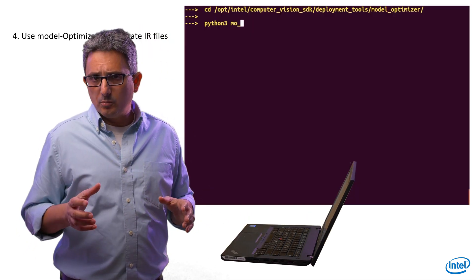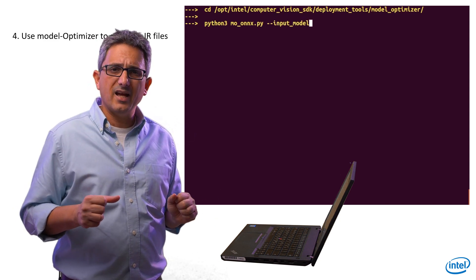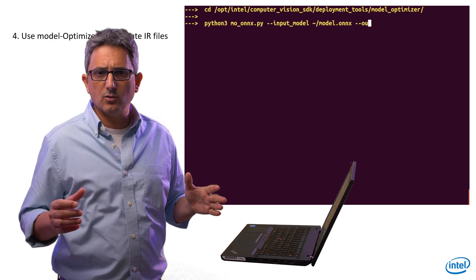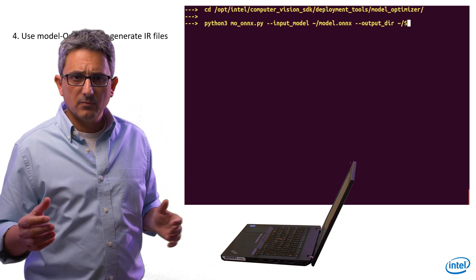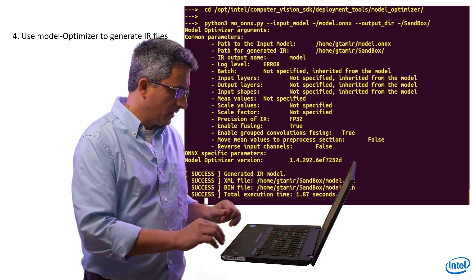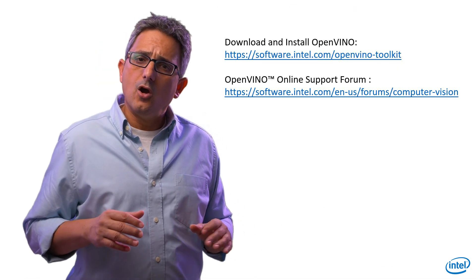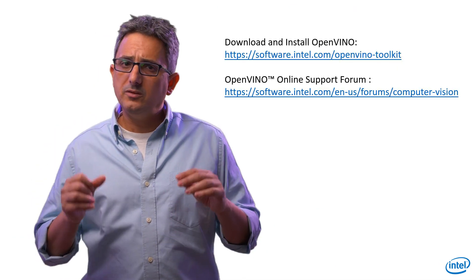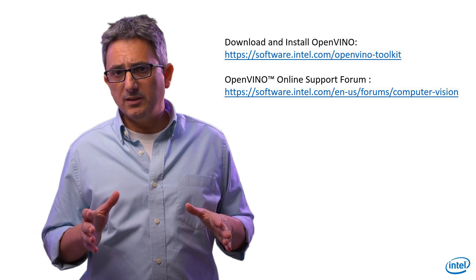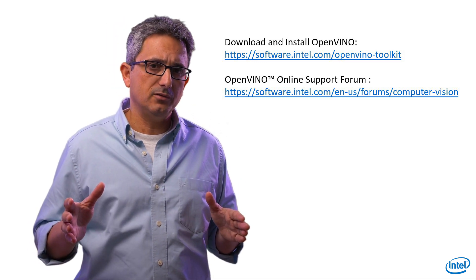Running the model optimizer looks exactly the same as before, and you can use all the options we talked about. Now let's just convert it. We got the IR file. So we've seen how to download an ONNX model, how to view it, and how to run the model optimizer to convert it.